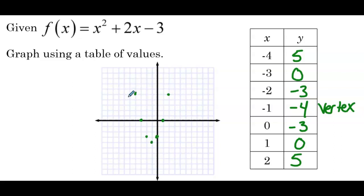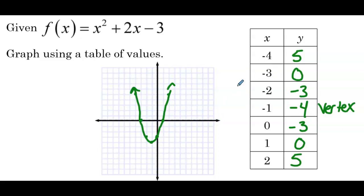These points define the parabolic curve, so we'll connect our points to get the parabola. We have 2 x-intercepts at (−3, 0) and (1, 0), and the discriminant was positive 16.